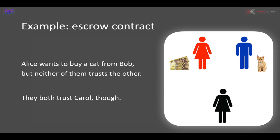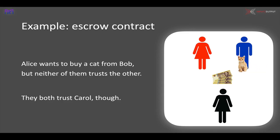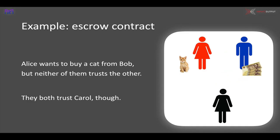Alice first puts the money into the contract and then we wait to see whether Bob transfers the cat to her. Alice and Bob are then asked: do you agree that you both made a transfer? In the case that they do, the money can be released and transferred to Bob. So if both Alice and Bob agree, there's no problem.